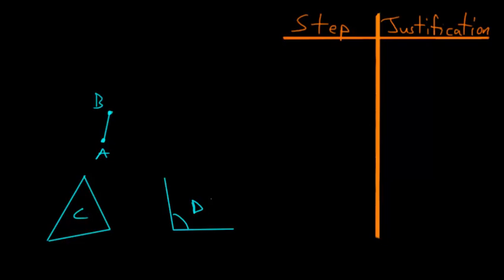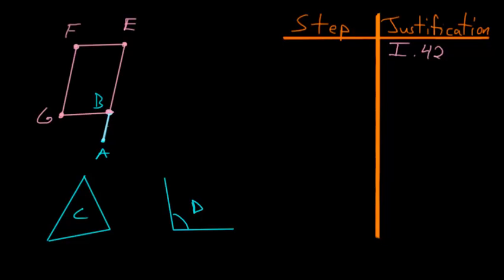Notice that this is fairly similar to Proposition 42 — the only difference is that now we are given this length of line that has to be a part of the parallelogram. To start, we're actually going to use Book 1 Proposition 42 to construct a parallelogram equal to this triangle C and containing this angle D, and we're going to do it at point B along line AB.